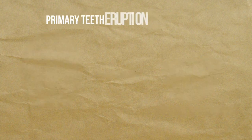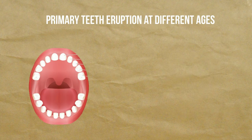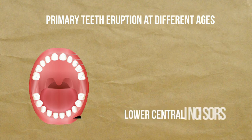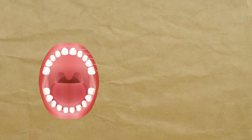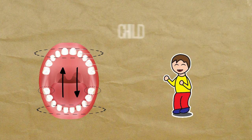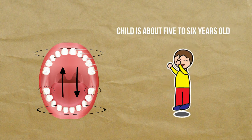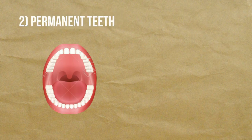Primary teeth erupt at different ages. The lower central incisors — the lower front middle teeth — usually come in first. Then teeth begin appearing on either side, working their way back to the second molars. The process begins to repeat itself when the child is about five to six years old, as permanent teeth start to come in.